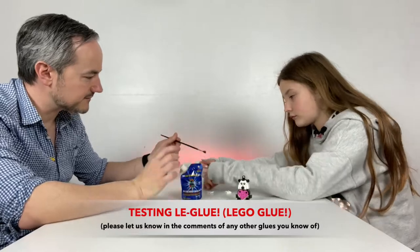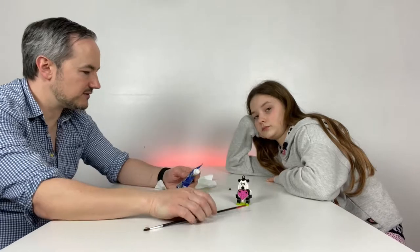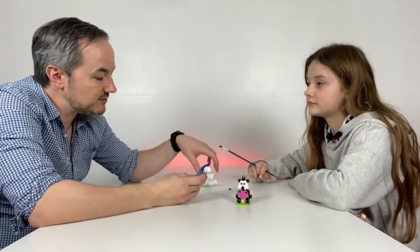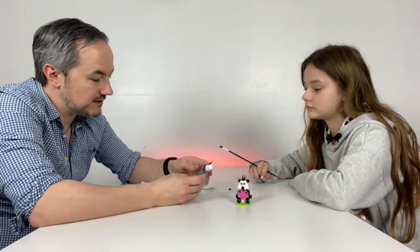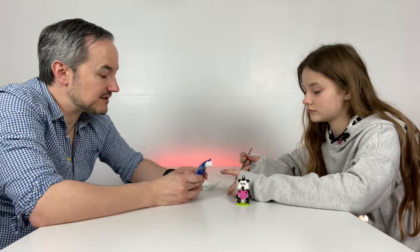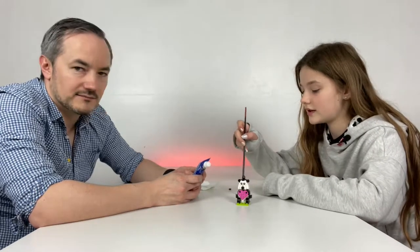Apply a small amount of Leglu to block using a brush. Do you want to do the first bit? Once applied, put blocks together as normal. Wipe away any residue with a damp cloth. We'll just use this kitchen roll. Glue sets within an hour. Cures in 24 hours. To loosen blocks, place in warm water and pull apart.